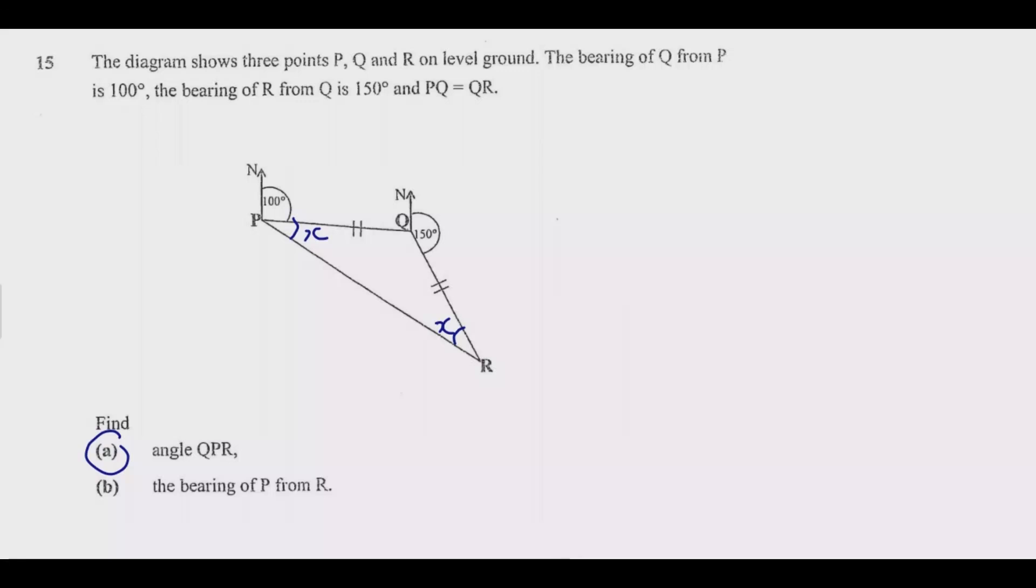To find X, we need to know this angle. From the bearings given, we can find that once we know this angle, which I'll call Z, it means X plus X plus Z equals 180 degrees. So X equals (180 minus Z) over 2.